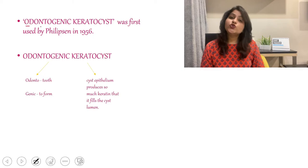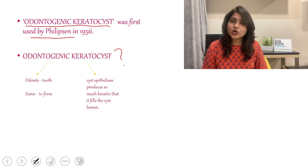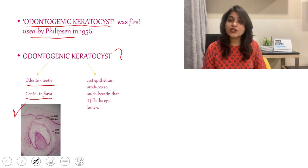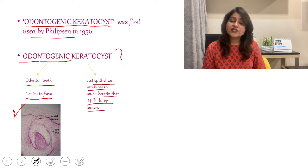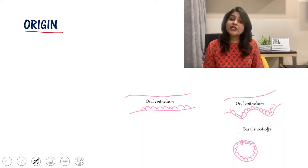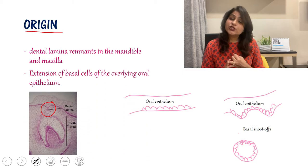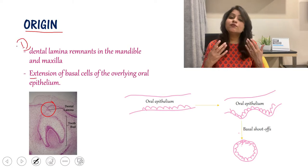The term odontogenic keratocyst was given by Philipson in 1956. It is called so because the cyst is derived from odontogenic tissues — that is, tooth-forming tissues — hence 'odontogenic.' The cyst epithelium produces so much keratin that it fills the cystic lumen, hence 'keratocyst.' Regarding tissue of origin, it is thought to be derived either from the remnants of the dental lamina or from extensions of the basal cells of the oral epithelium, with the first theory being more accepted.